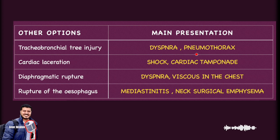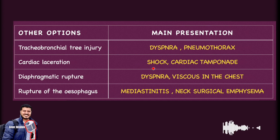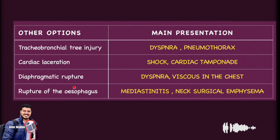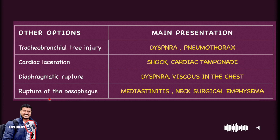The other differential options: tracheobronchial injury presents mainly with dyspnea and pneumothorax. Cardiac laceration presents with hypovolemic or hemorrhagic shock, or obstructive shock due to cardiac tamponade. Diaphragmatic rupture presents with dyspnea and viscera in the chest on X-ray. Rupture of the esophagus presents with mediastinitis, cervical surgical emphysema.